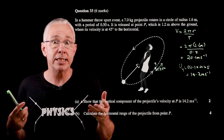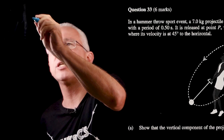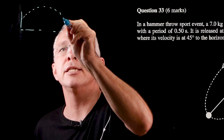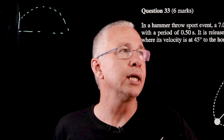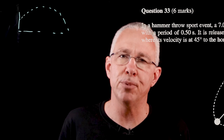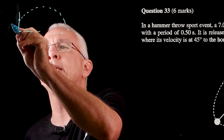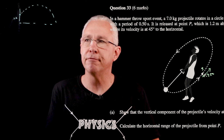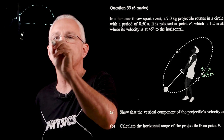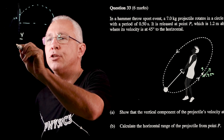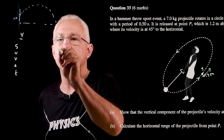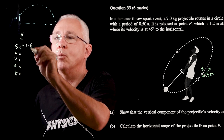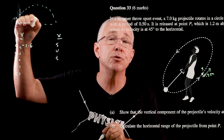For part b, we set up projectile motion. The hammer leaves at 1.2 m above the ground, so we draw the trajectory starting 1.2 m up. Setting downward as negative, our vertical displacement s = −1.2 m. I always encourage setting out variables in the y-direction and the x-direction, using kinematic equations. In the y-direction we have s, u, v, a, and t.